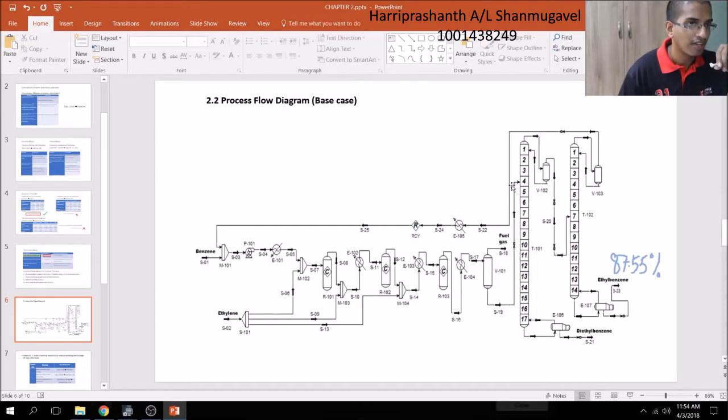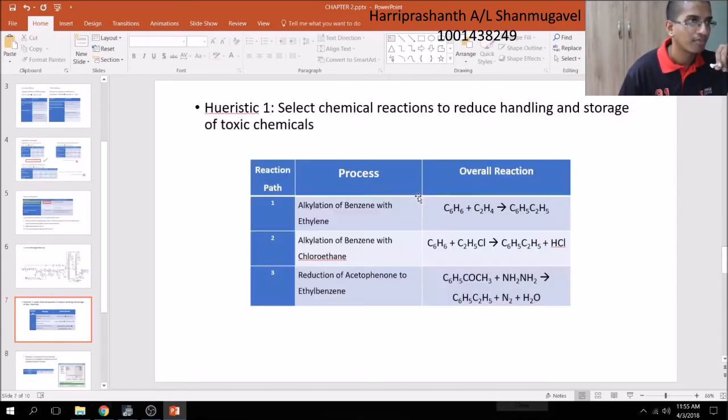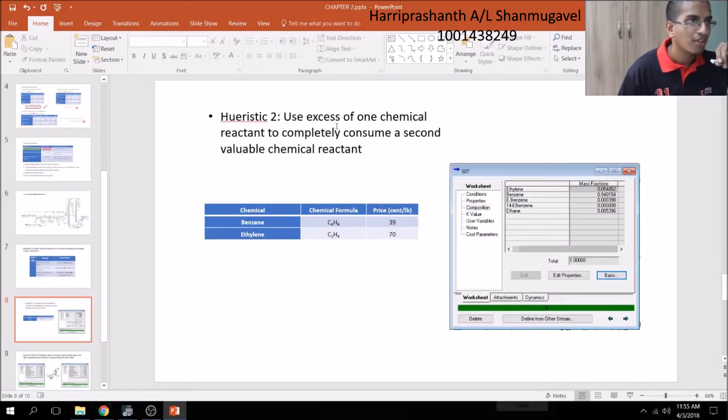This process is repeated for the third reactor. The cooling process before each reactor is to cool down the output since the reaction is extremely exothermic. Lower temperature favors the reaction. The product from the final reactor is cooled before entering a separator to separate the fuel gas containing ethylene. The liquid stream is fed into two distillation columns in series. The first separates diethylbenzene as bottom product. The second column separates benzene for recycle and main product ethyl benzene as bottom product.